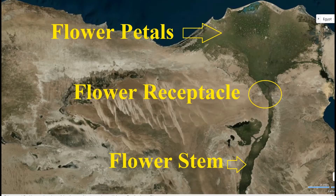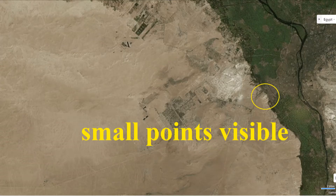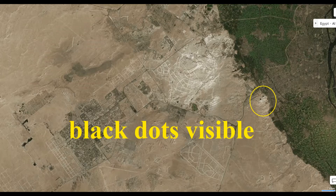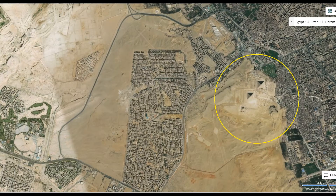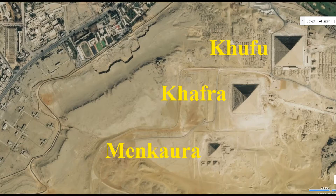The Nile River, as it runs up Egypt, resembles a flower — you can see the flower stem in the south and the flower petals in the north as it becomes a delta and reaches the Mediterranean. We're going to focus on the flower receptacle where the stem and budding flower come together and zoom in. As we focus and zoom in closer, we see some dots and black spots, and we realize those black spots are the north face of the pyramids — clearly the pyramids of Giza.